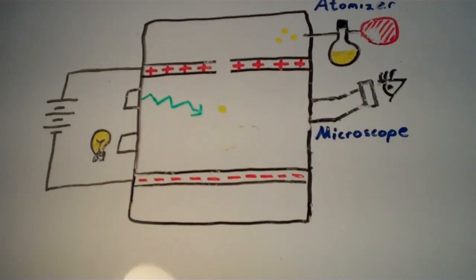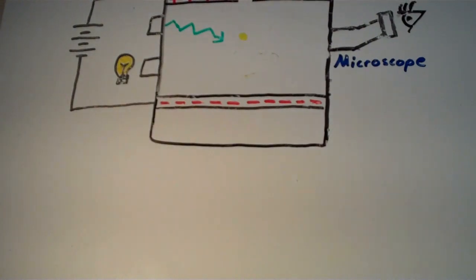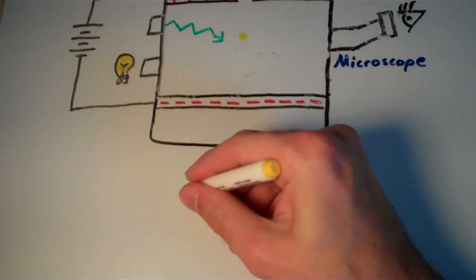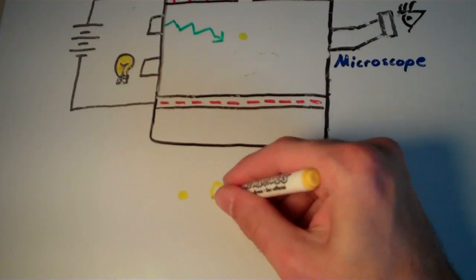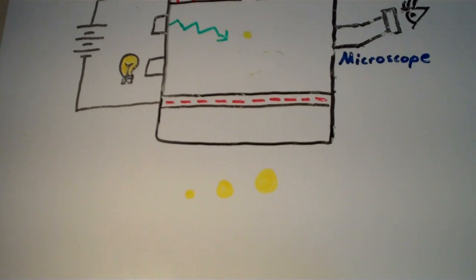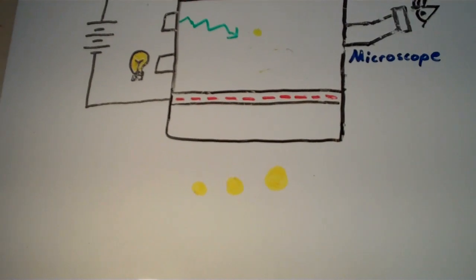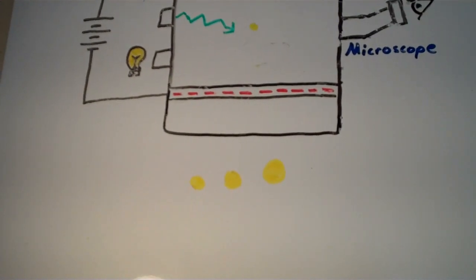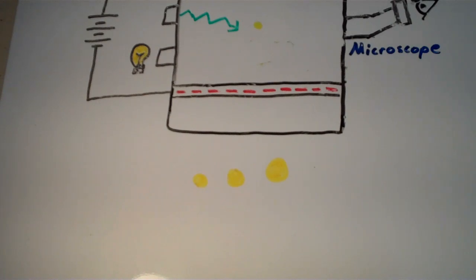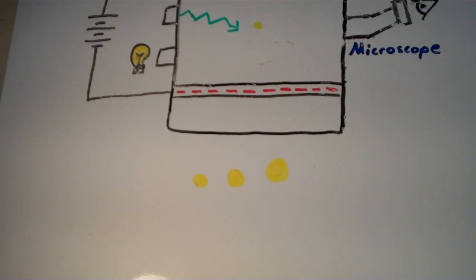So imagine that you perform this experiment just like Millikan did. And you end up with, let's say you end up with three drops. So I have a little drop here, a big drop here, and then an even bigger drop here. So each one of these drops has its own mass. Well, Robert Millikan reasoned that each one of these drops must contain a whole number of electrons.